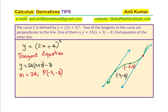Let us call these two tangent lines L1 and L2. The equation of L1 is given to us; we need to find the equation of L2. We do not know the point of tangency for L2, so let us label it as (a, b). We know that the slope of L2 is the same as L1 since they are parallel. So from the given equation of the curve, we can find the slope.